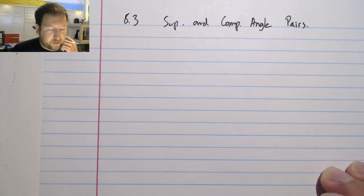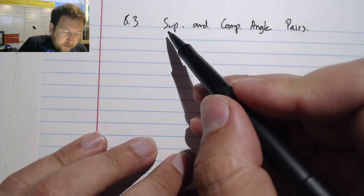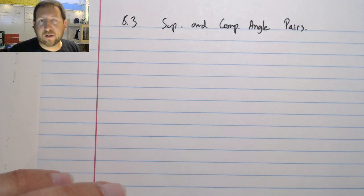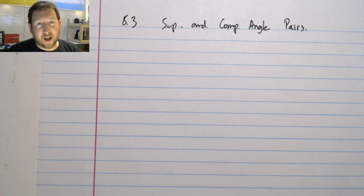Alright, we're going to go on to section 8.3 and we're going to be talking about supplementary and complementary angles again. And we're going to be doing some interesting algebra to solve for the other side of the angle.